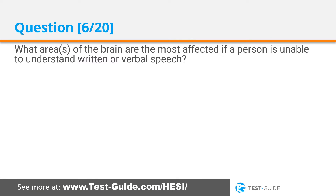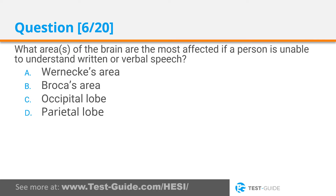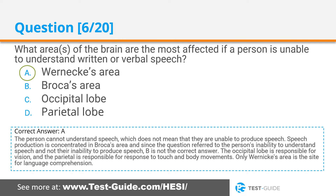Question six: What area of the brain is most affected if a person is unable to understand written or verbal speech? Options: Wernicke's area, Broca's area, occipital lobe, parietal lobe. Correct answer A. The person cannot understand speech, which does not mean they are unable to produce it. Speech production is concentrated in Broca's area, so B is not correct. The occipital lobe is responsible for vision, and the parietal lobe for response to touch and body movements. Only Wernicke's area is the site for language comprehension.